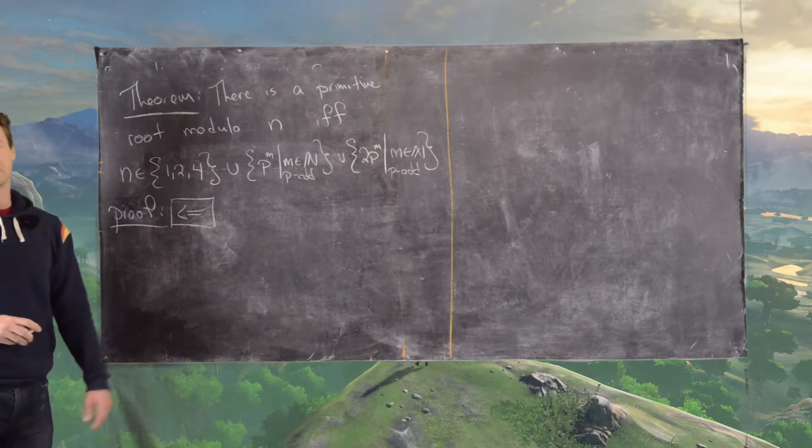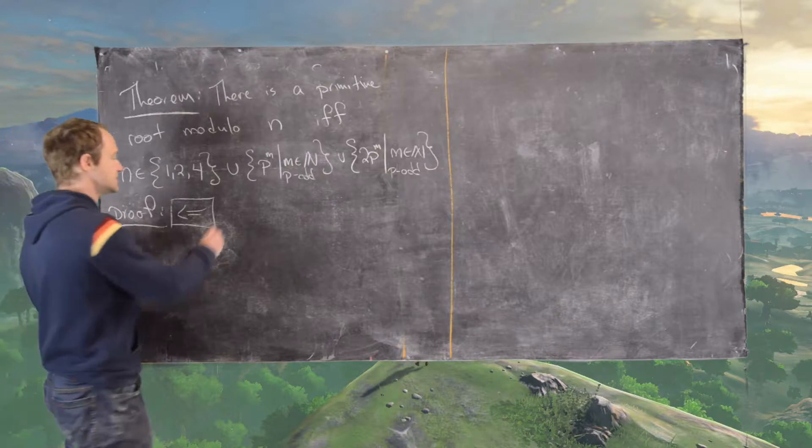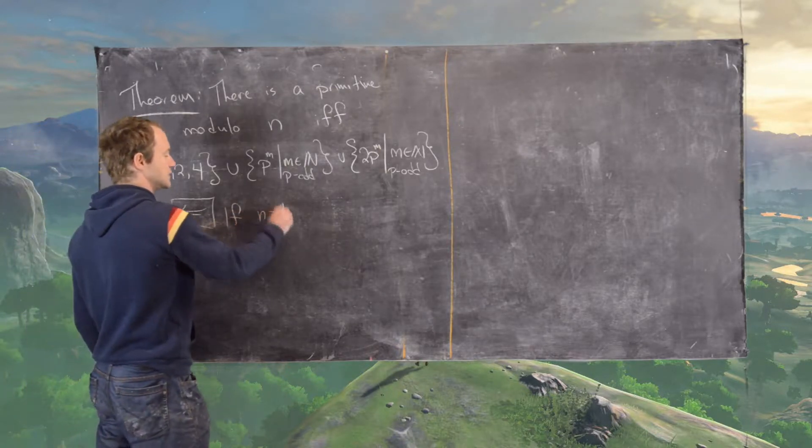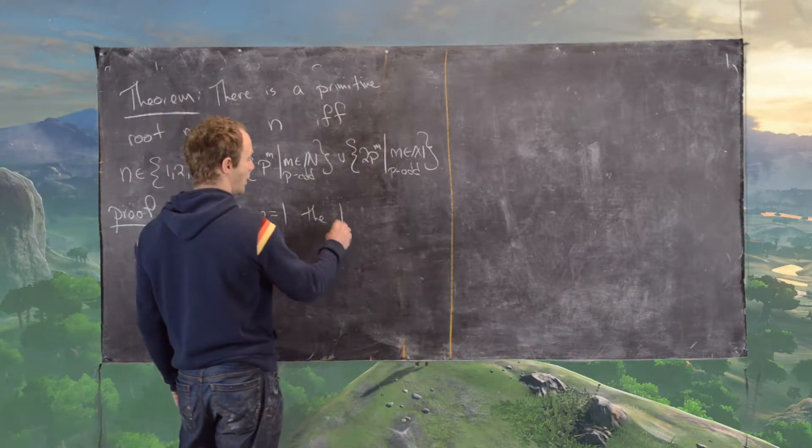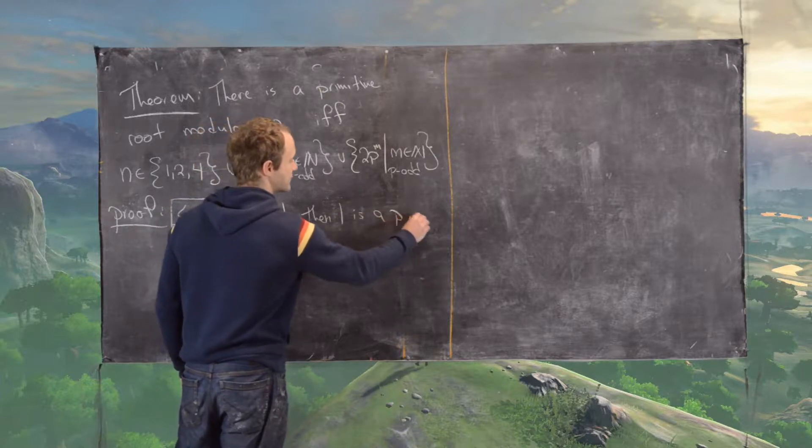And so if n is in one of these sets, so if n equals 1, then 1 is a primitive root.